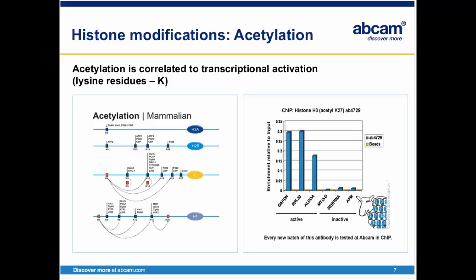In the example presented here, AB4729 has been used in a ChIP experiment. The enrichment of histone 3, acetylated on lysine 27, has been found on actively transcribed genes such as GAPDH, RPL30, and Aldolase-A, but not on the silent MyoD, Serpina, or IFNγ, as tested by QPCR.